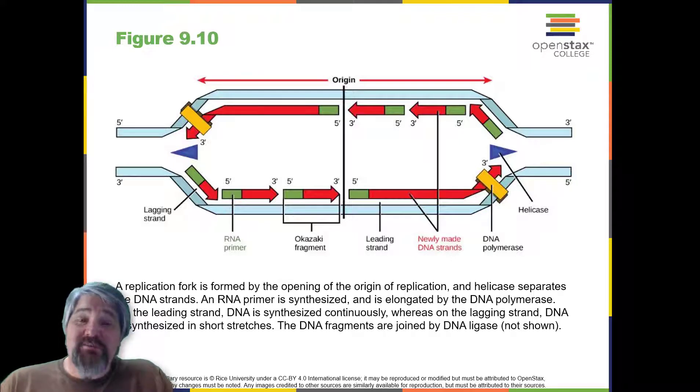Two replication forks are formed at the origin of replication, and these get extended in both directions as replication proceeds. There are multiple origins of replication on the eukaryotic chromosome, such that replication can occur simultaneously from several places in the genome. In humans, this works out to be about 30,000 to 50,000 origins of replication.